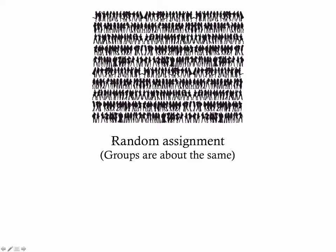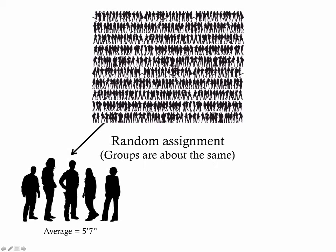You're going to end up with groups that are about the same. So you will have differences in individual things — like height, or immune system, or diet — but on average, the average characteristics of each group will end up being about the same.